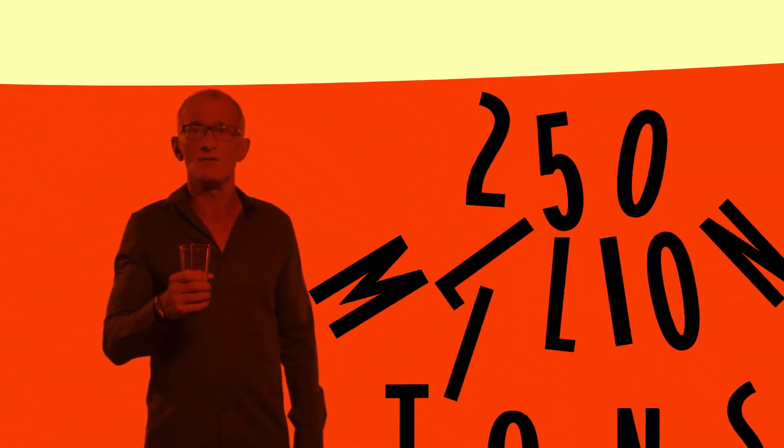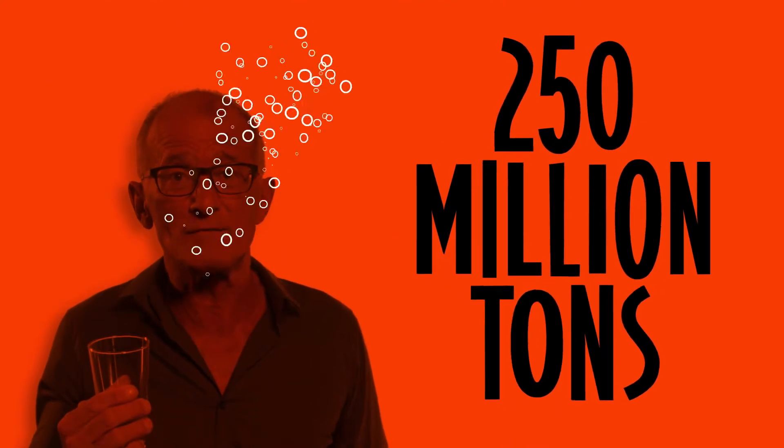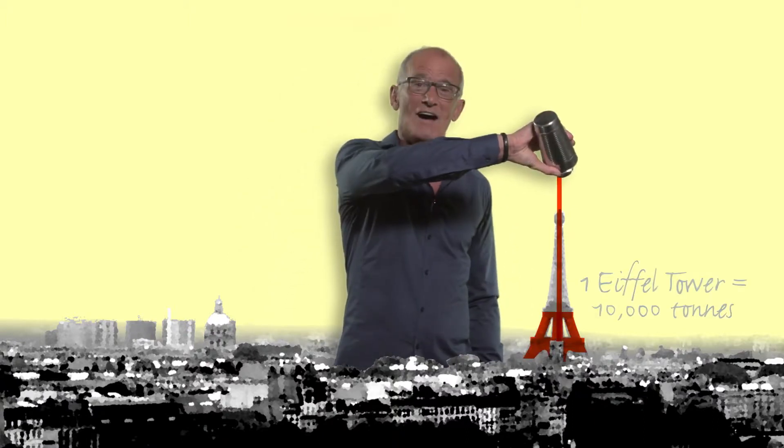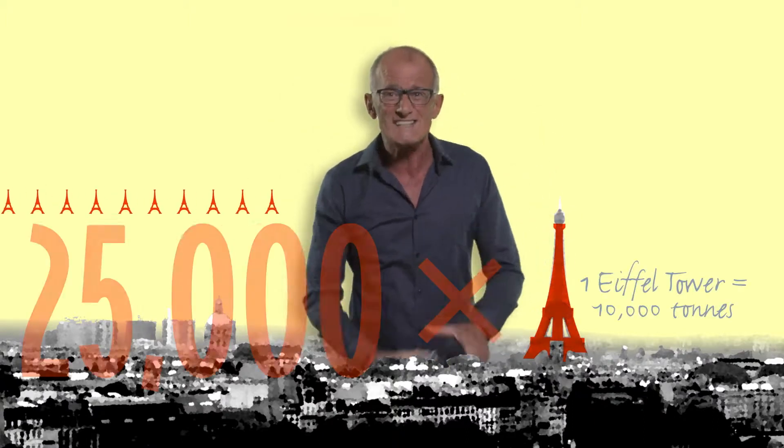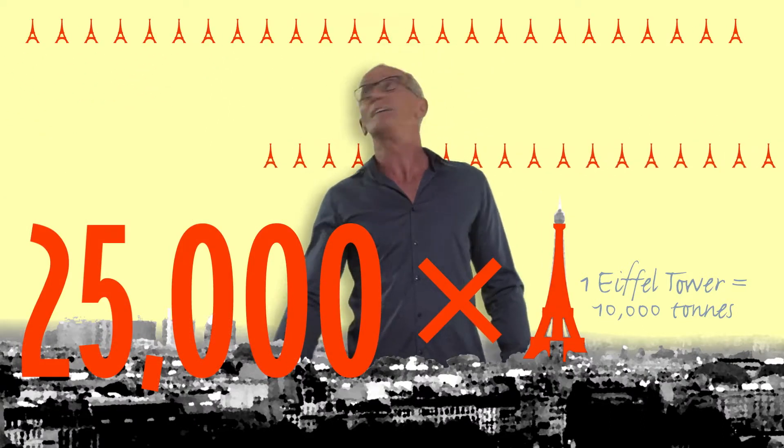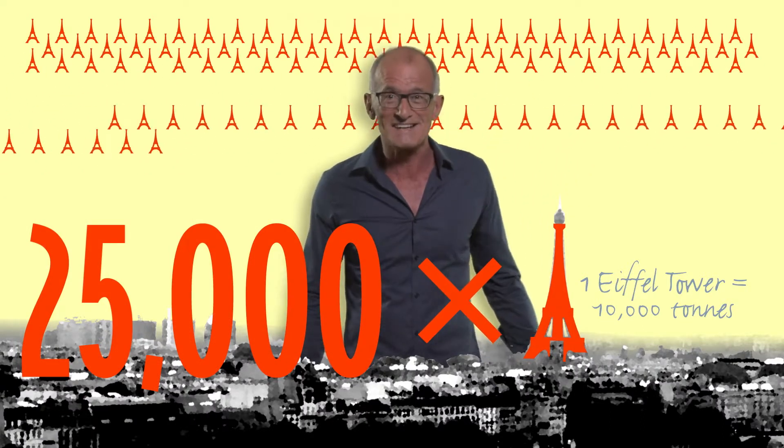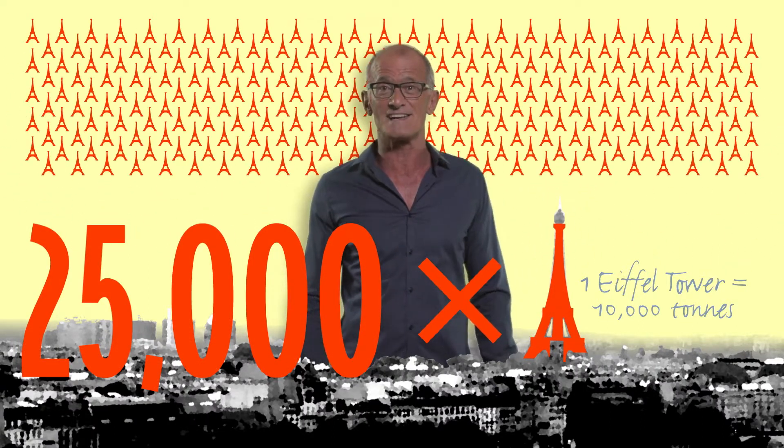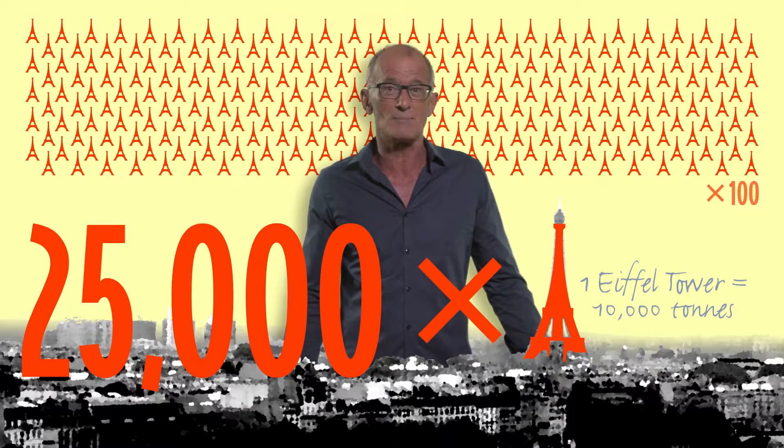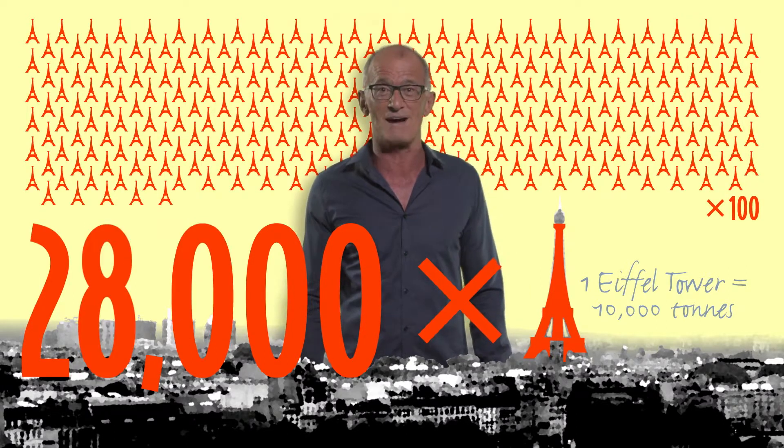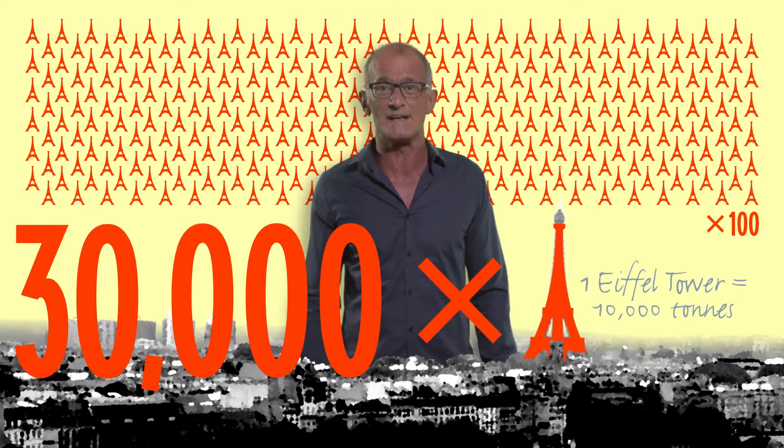Experts reckon that there are no less than 250 million tonnes. Yes, you heard correctly, 250 million tonnes of red mud. That is the equivalent of not one Eiffel Tower but 25,000 Eiffel Towers all filled up with the red stuff. And on top of that, it's in endless supply as we keep on producing around 500 more Eiffel Towers of red mud every single year.